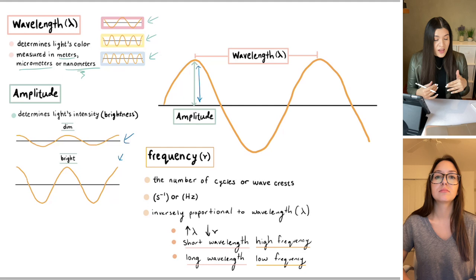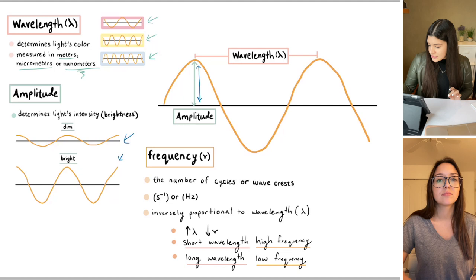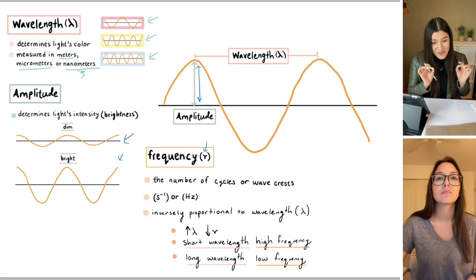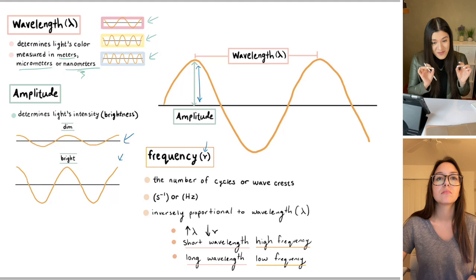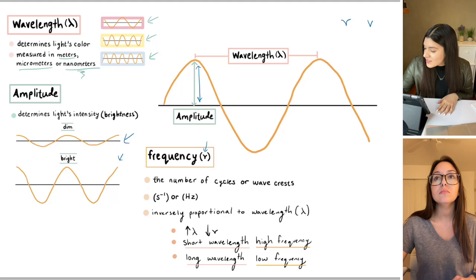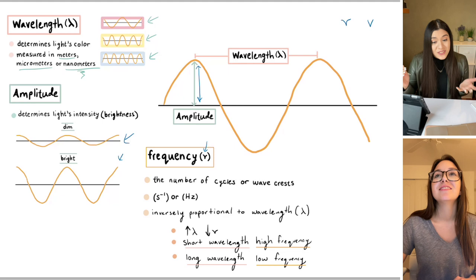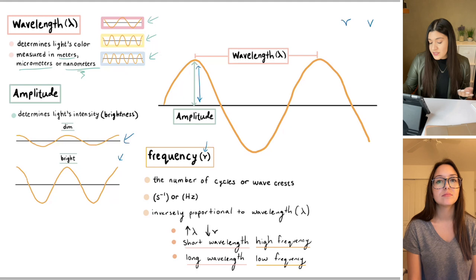Understanding those properties and seeing what changes whenever we change the wavelength and the amplitude, those are multiple choice questions for you right there. And then same with our frequency, just understanding what that is. Our frequency is represented by this v-looking shape, but it's not a v. There's going to be a main differentiator. This is frequency, this v is velocity. I wish they didn't choose that, but it's really similar so be aware of that.